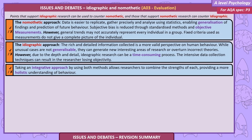The nomothetic approach: data is easier to replicate, gather precisely and analyse using statistics, enabling generalisation and prediction of future behaviour. Subjective bias is reduced through standardised methods and objective measurements. However, general trends may not accurately represent every individual in a group, and fixed criteria used as measurements do not give a complete picture of the individual. The ideographic approach: the rich and detailed information collected provides a more valid perspective on human behaviour. While unusual cases are not generalisable, they can generate new areas of research or overturn incorrect theories.